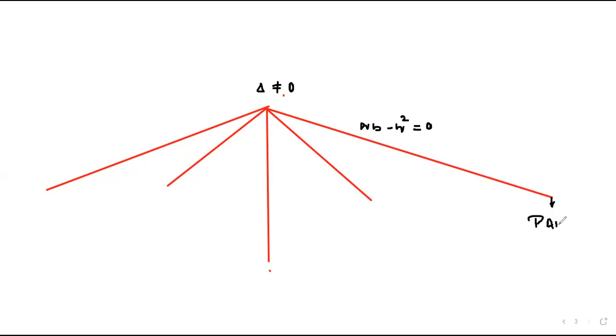And if ab minus h square is positive, then the equation will represent an ellipse.